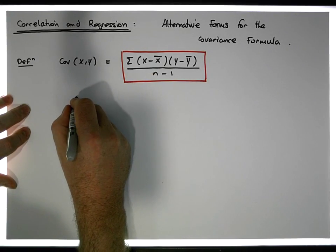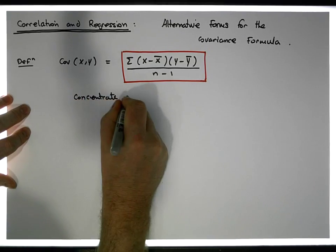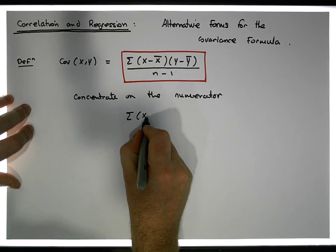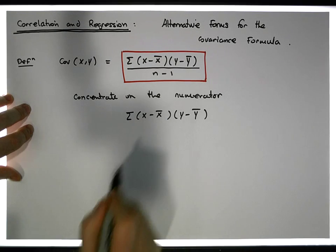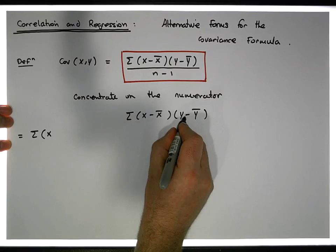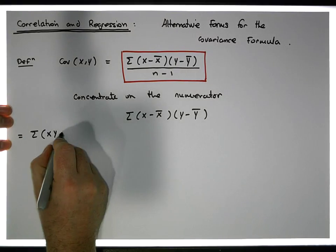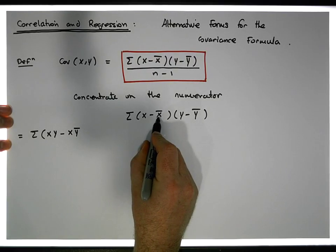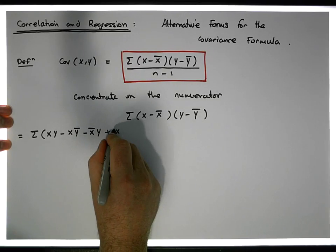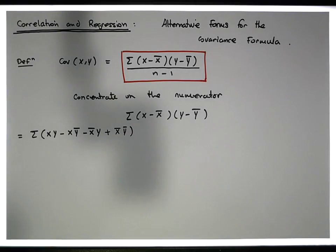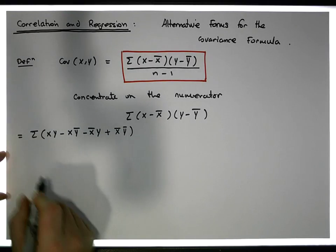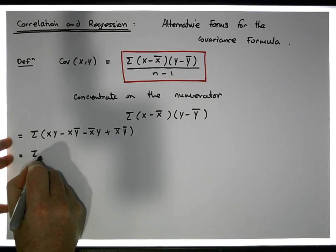The numerator is the sum of (xᵢ − x̄)(yᵢ − ȳ). I'll multiply out the brackets: x times y gives xy, x times minus ȳ gives minus xȳ, minus x̄ times y gives minus x̄y, and minus times minus gives plus x̄ȳ. Since this is a summation of a sum, it becomes the sum of the individual terms: the sum of xy.